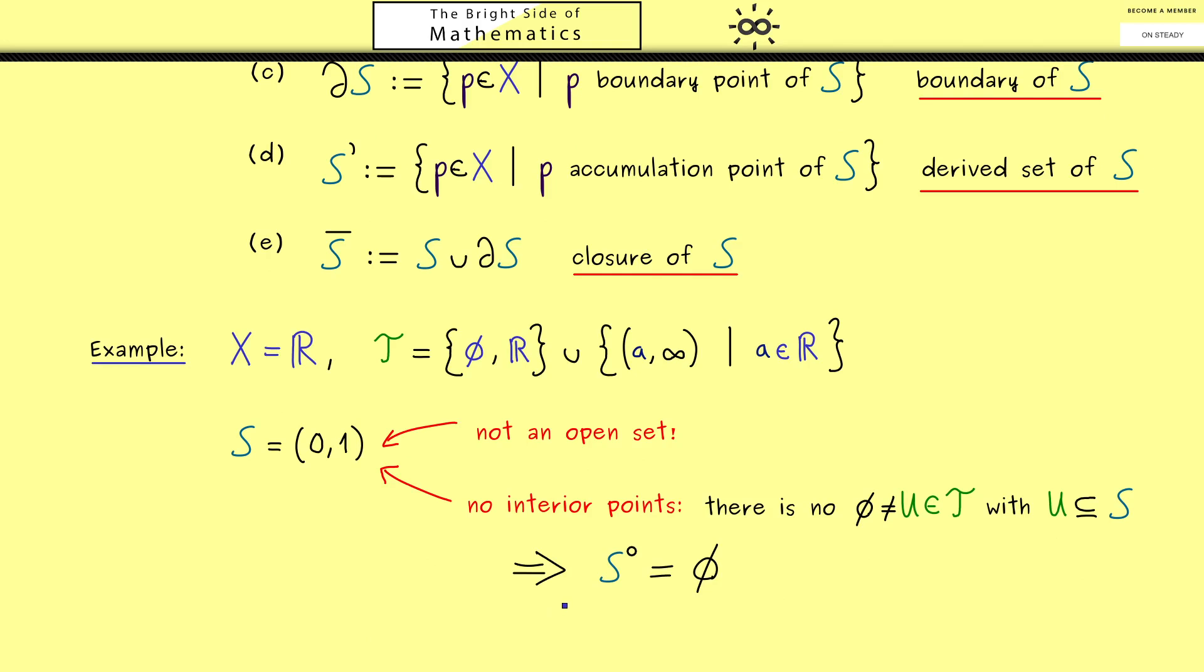Now you might ask, what can we say about the exterior points? And there you know we have to look at X without S. So the complement of S, which is simply the interval from minus infinity to 0 and then the union of the interval from 1 to infinity.